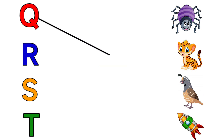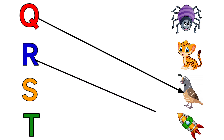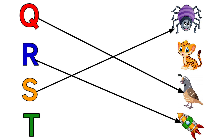Q for Quail, R for Rocket, S for Spider, T for Tiger.